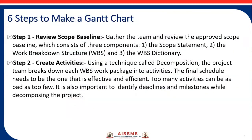There are six steps to make a Gantt chart. We have seen what a Gantt chart is, how it looks, and how it helps in project management. Now, how to make it. Step one is review the scope baseline. We need to first gather the team who is going to work on the project and review the approved scope baseline — whatever the project charter or project scope baseline statement is prepared.